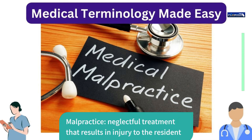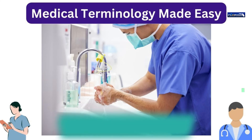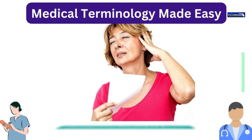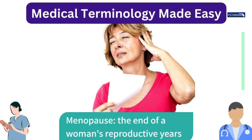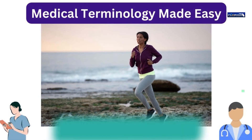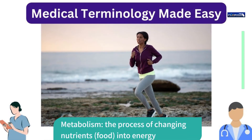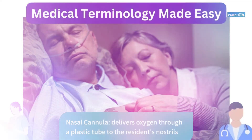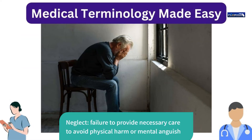Malpractice: neglectful treatment that results in injury to the resident. Medical asepsis: practices used to remove or destroy germs to prevent the spread from one person to another. Menopause: the end of a woman's reproductive years. Metabolism: the process of changing nutrients, food, into energy. Nasal cannula: delivers oxygen through a plastic tube to the resident's nostrils. Neglect: failure to provide necessary care to avoid physical harm or mental anguish.